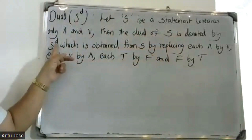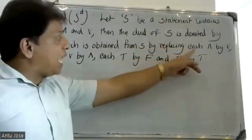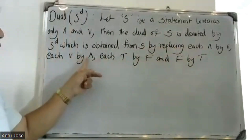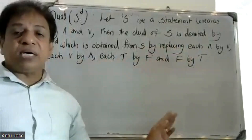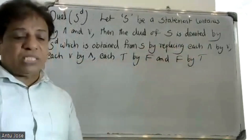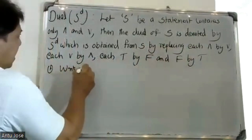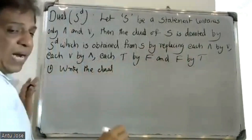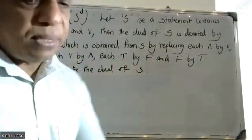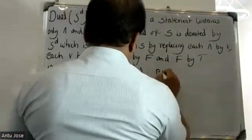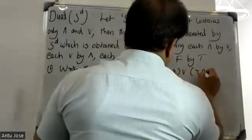S^d is obtained from S by replacing each AND by OR, each OR by AND, each T by F and F by T. For example, the dual of S: p AND negation q OR r AND t.